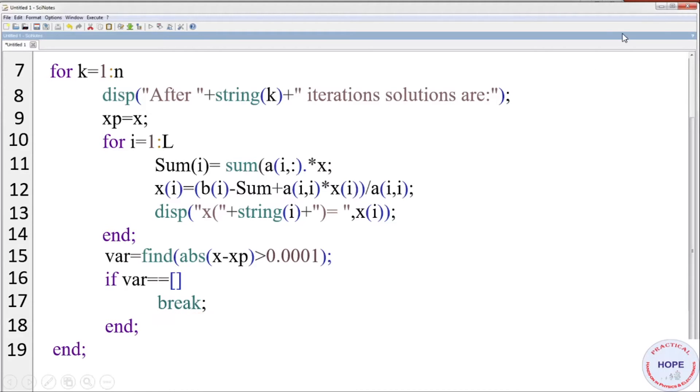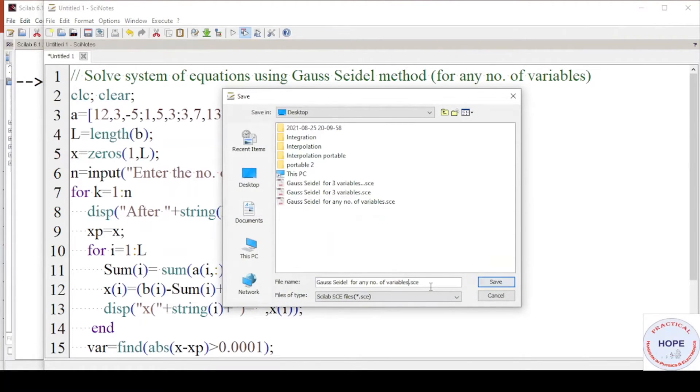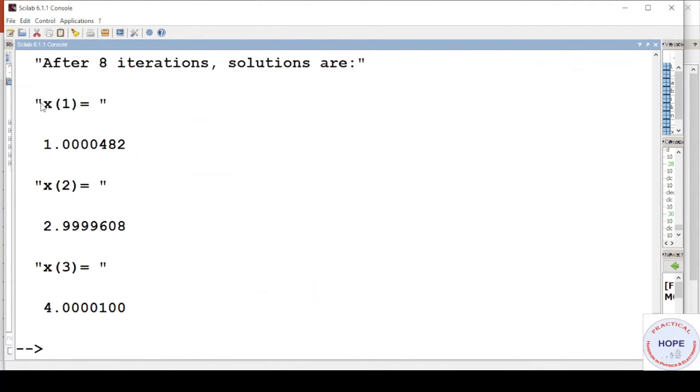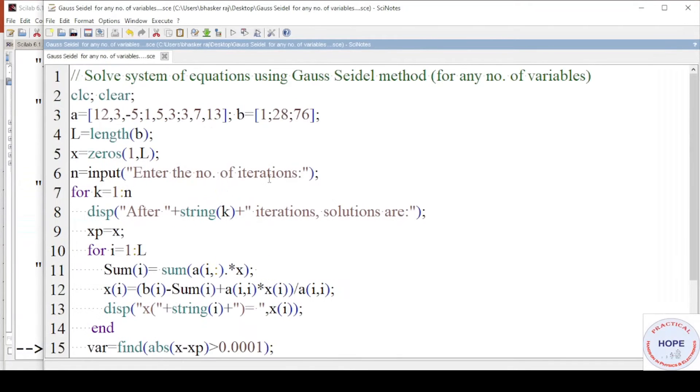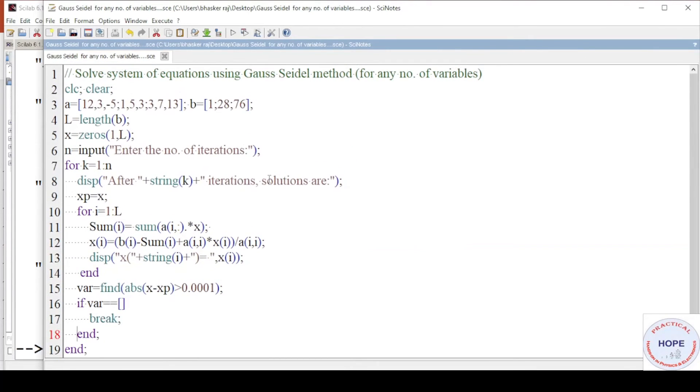Finally end, minimize it, execute it, save it, go to the console, enter number of iterations say 10. So these are the final solutions x1 is 1, x2 almost 3 and x3 is 4. This program is general that means if you want to use this program for four variables then you just need to change this a and b. Rest of the program will remain same. It will automatically detect how many number of variables are there from this vector b. So you can solve the system of any number of variables using this program.